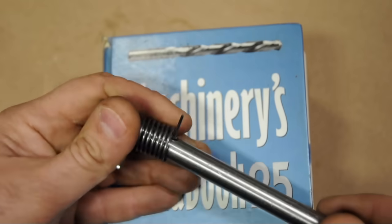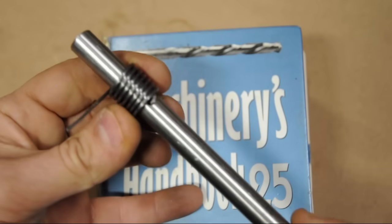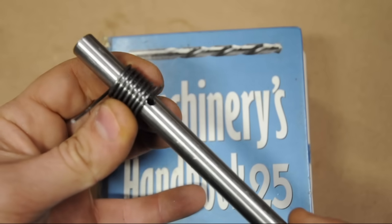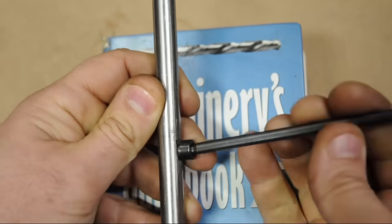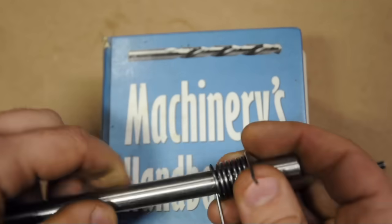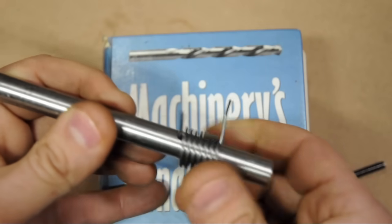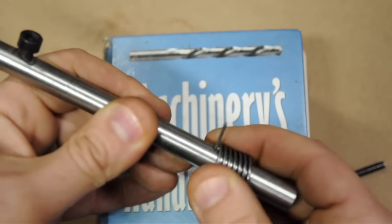The mandrel will also require a wire retention feature. A through-hole works fine for compression and extension springs, but you'll need a screw or some way to clamp the wire for torsion springs. If this were a torsion spring, you'd have quite the time getting it off the mandrel.